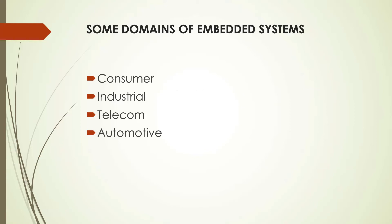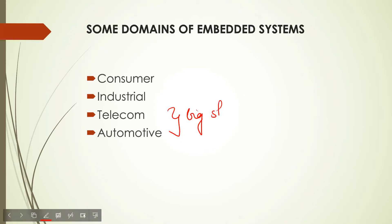The second domain is industrial, like your medical industry. The third one is your telecom. And the fourth one is your automotive. The telecom and automotive take the biggest share. So we are selecting automotive embedded systems today.